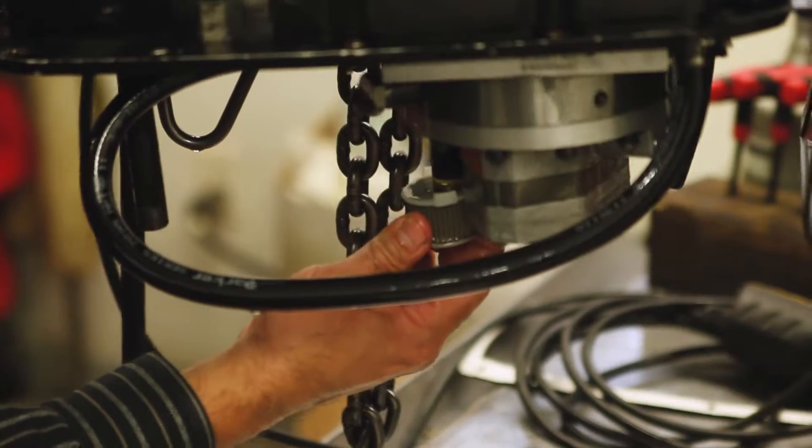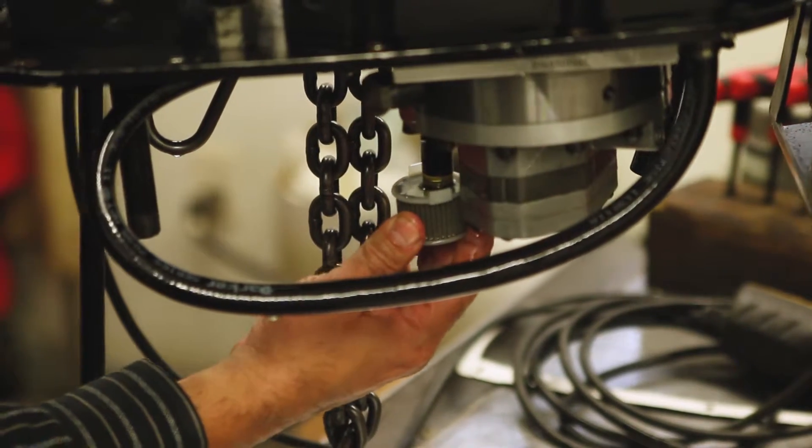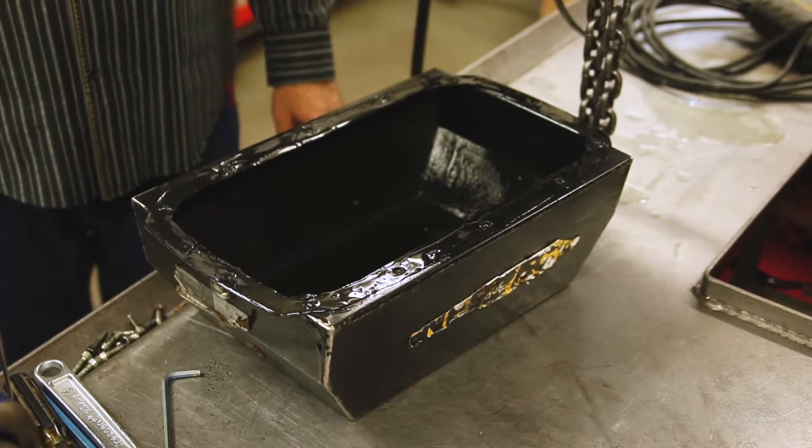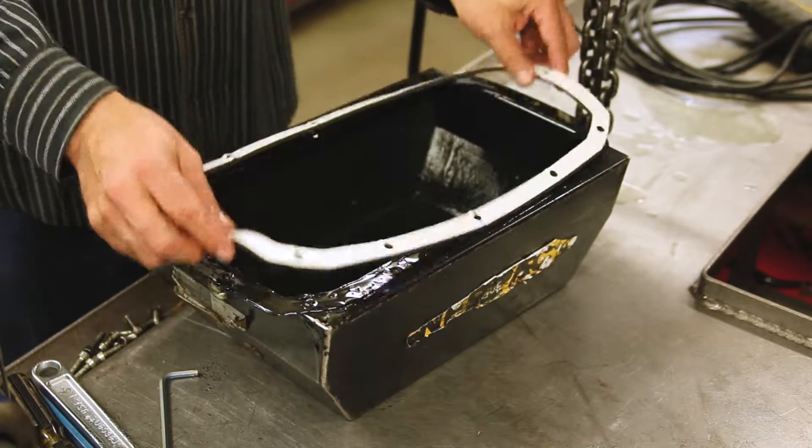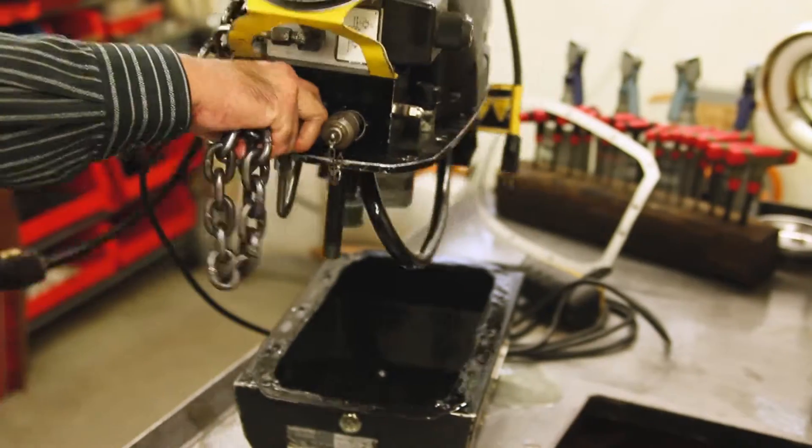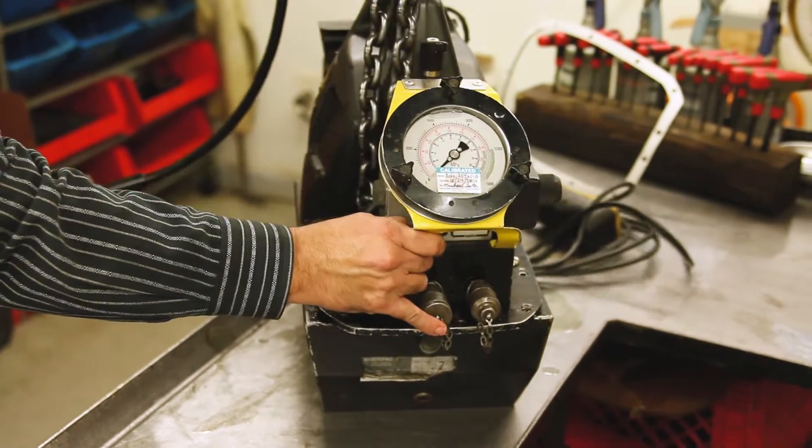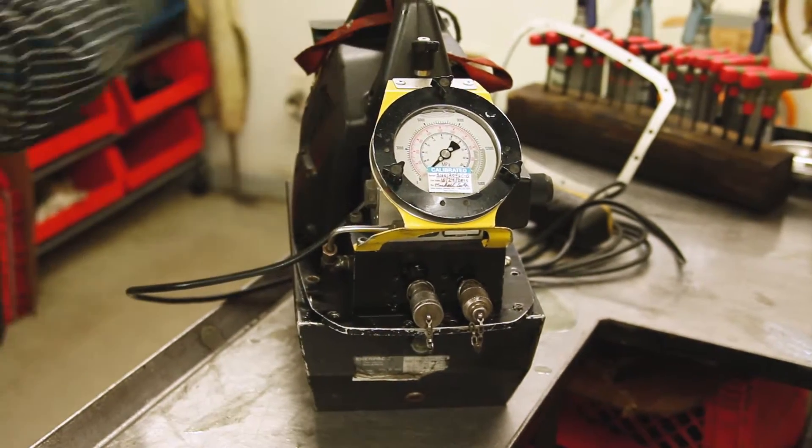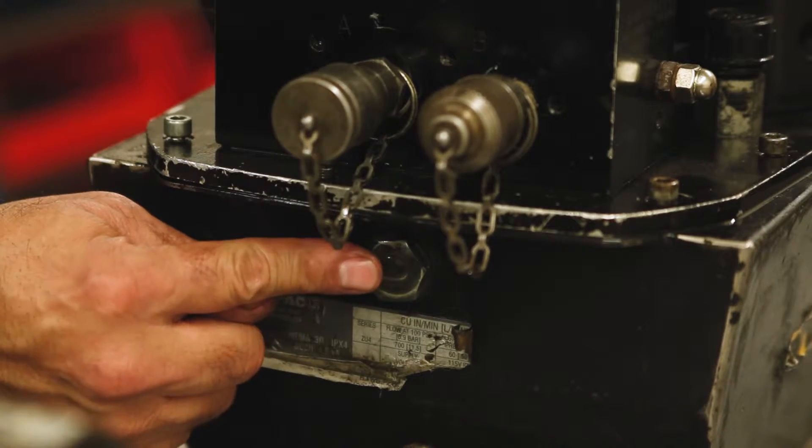Inspect the pickup filter and clean or replace if necessary. Reassemble the pump and reservoir, installing a new reservoir gasket. Fill the reservoir with clean hydraulic fluid. The reservoir is full when the oil level is a little over halfway up the sight glass.